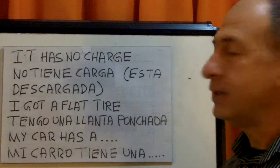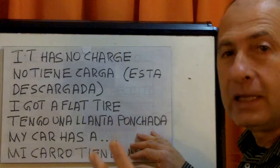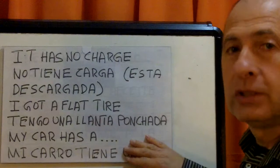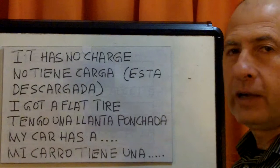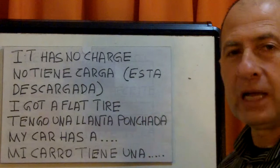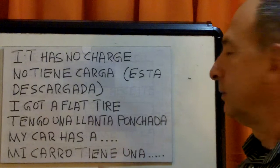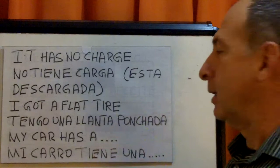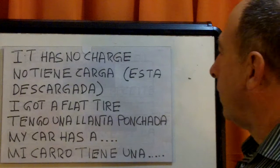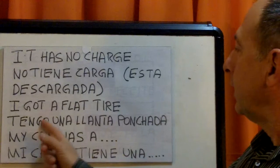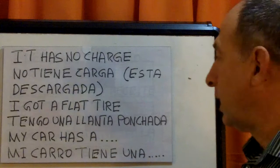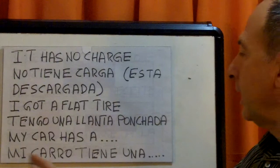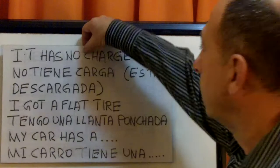If it has two flat tires: mi carro tiene dos llantas ponchadas. Tres means three flat tires. Mi carro tiene cuatro llantas ponchadas — my car has four flat tires, just for practicing. So again: no tiene carga, está descargada, tengo una llanta ponchada, mi carro tiene una llanta ponchada. Let's keep going. Continuemos.